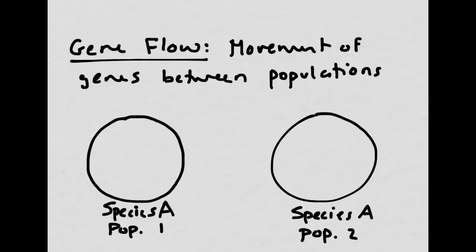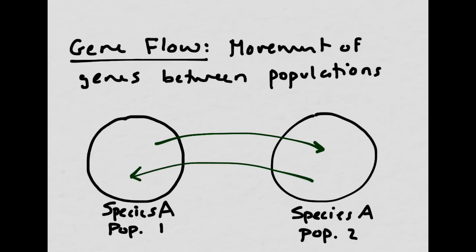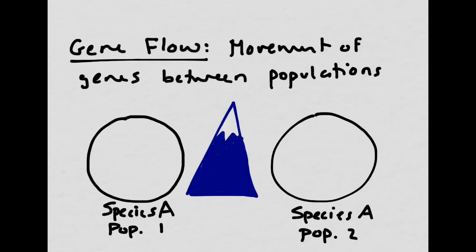Gene flow is a little bit different because it happens whether the population is big or small, and it's essentially the movement of genes or alleles between populations. Here we have species A in two locations — population 1 on the left and population 2 on the right — and it would be normal for them to interbreed. But problems arise if there's a barrier preventing them from meeting, such as a big snowy mountain in between, which would greatly reduce crossover between the two populations.